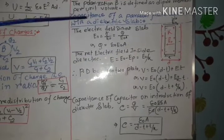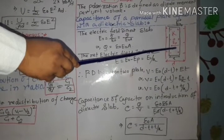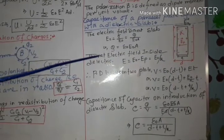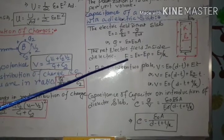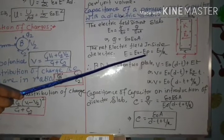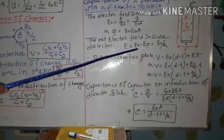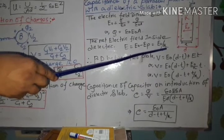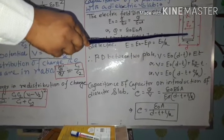Due to polarization, a polarizing field develops within the dielectric. The net electric field inside the dielectric is E equals E naught minus E_B, where E_B is the polarizing field. This net field inside the dielectric is given by E naught by K, where K is the dielectric constant of the dielectric slab.